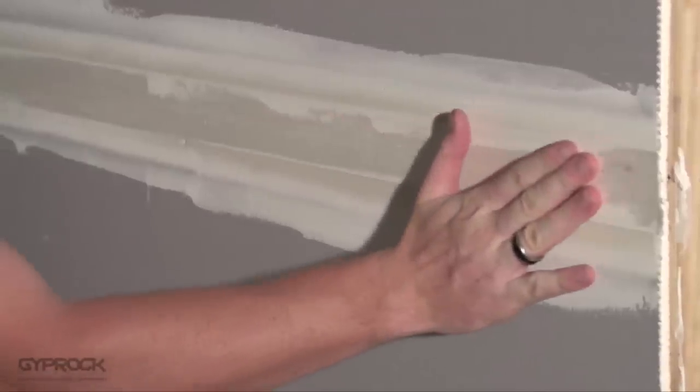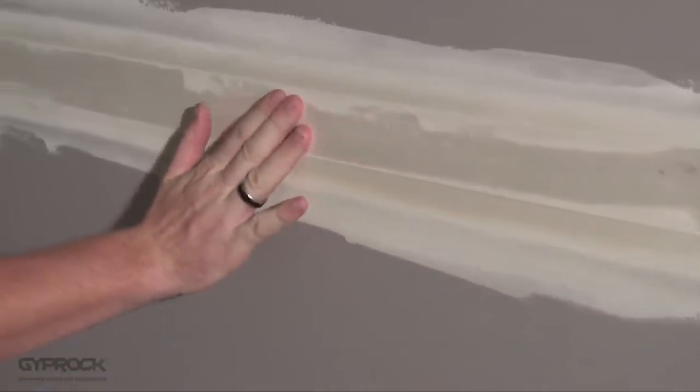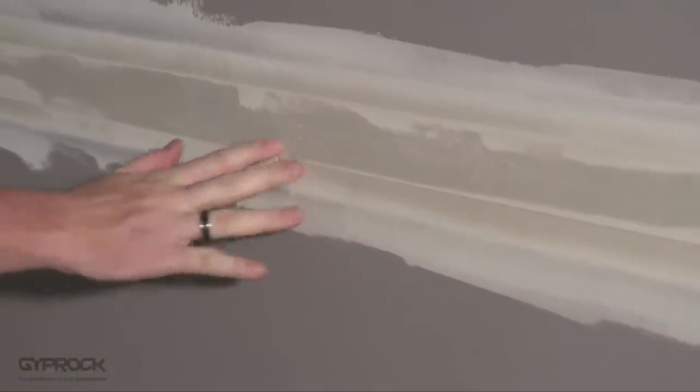The next issue you might see is visible tape, which could be due to lack of coverage or over sanding. Just apply another coat wider than the last, let it dry fully before sanding.